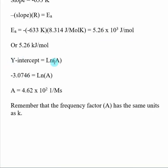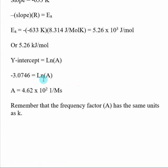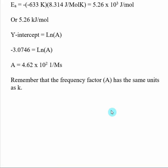You can also take the y-intercept from the graph, which in this case is negative 3.07. That equals the natural log of A, so solving for A gives 4.62 times 10 to the second. This value A is called the frequency factor — it's a constant that has to do with the reaction, as discussed in collision kinetics. The units on A are going to be the same as the units on K. In this case, we were looking at a second order reaction, so the units on A are 1 over molar per second.